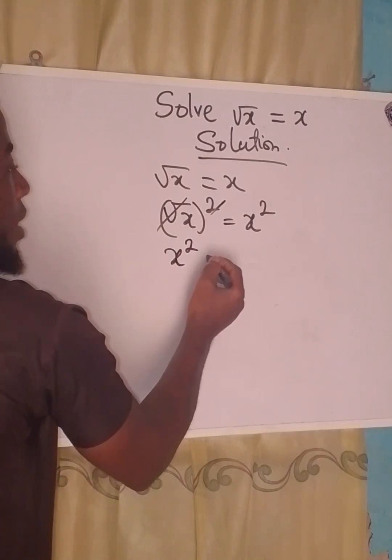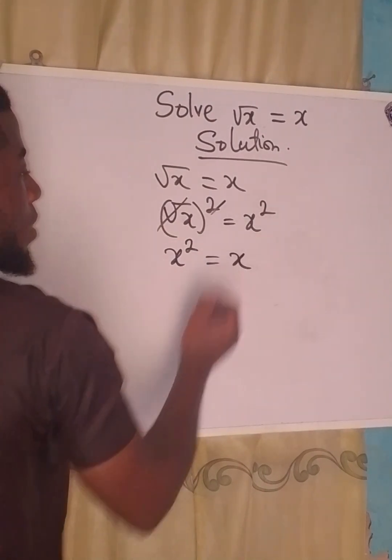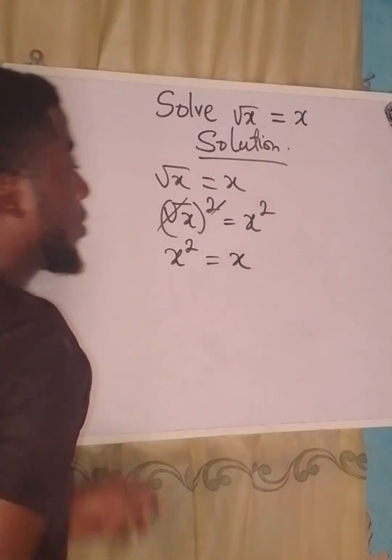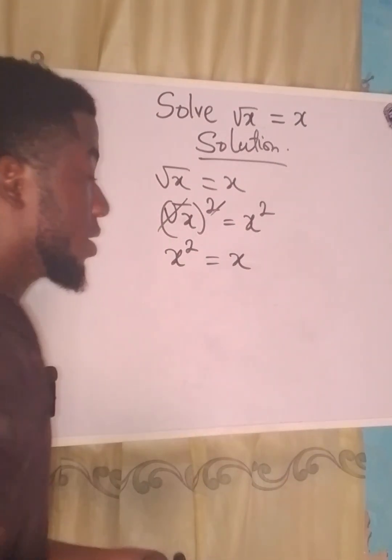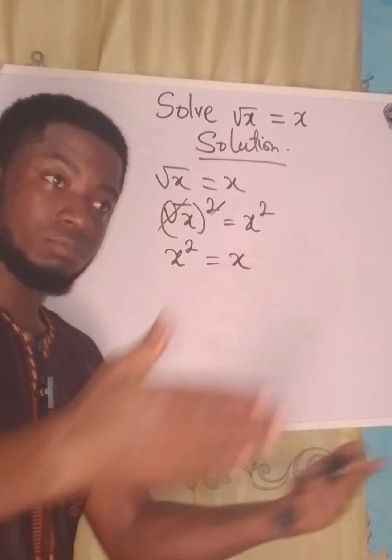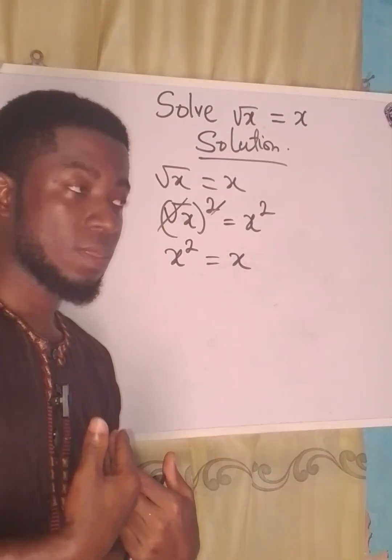Now do not divide all through or divide both sides by x. You will rather take the square root of both—I mean bring everything to the same side, and then after that you factorize.